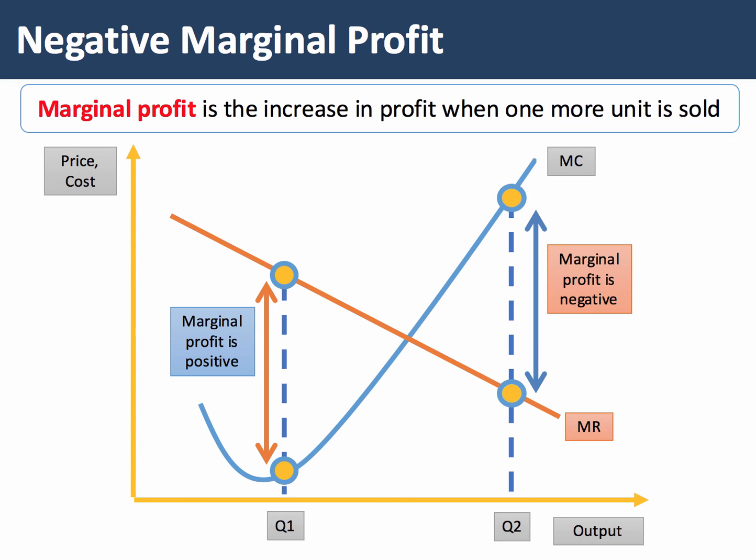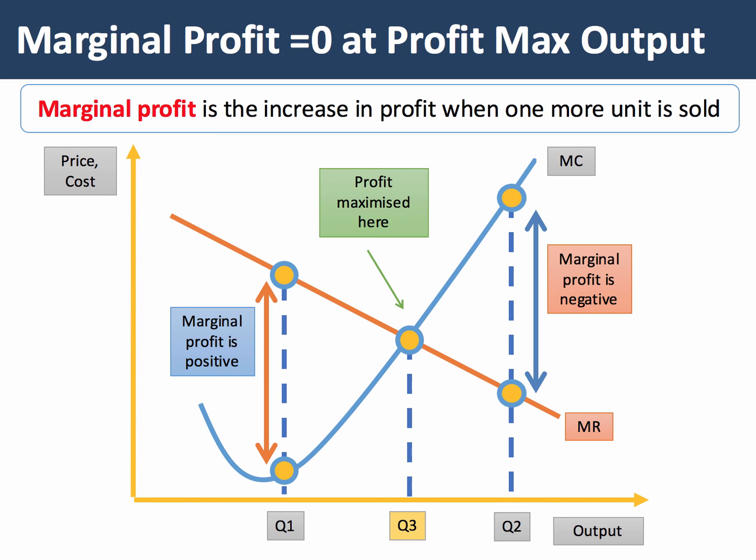Profits must be falling. Clearly, therefore, at Q3, when the marginal profit is zero, profits are maximised. In other words, profit maximisation happens when marginal revenue equals marginal cost.